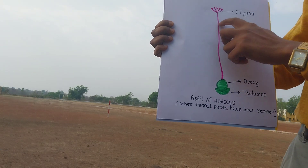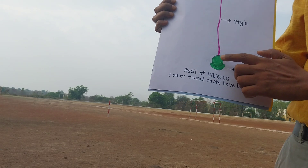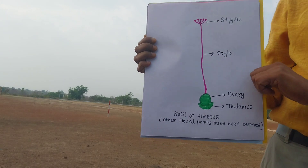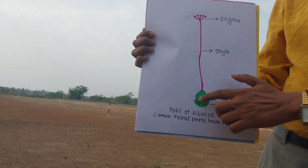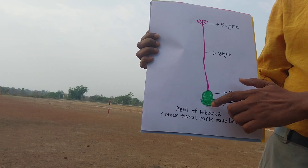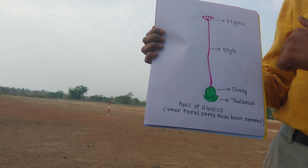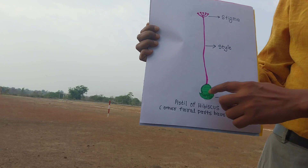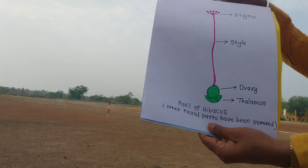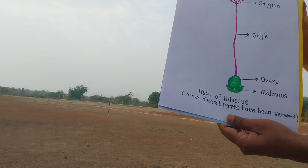This is the stigma; this is the style, which is a tube; and the last part is the Ovary. Inside the ovary the female gametophyte is present. The ovary contains ovarian follicles, and those ovarian follicles contain the placenta. The ovary is situated on the thalamus part. So these are the different parts of the Gynoecium or Pistil.